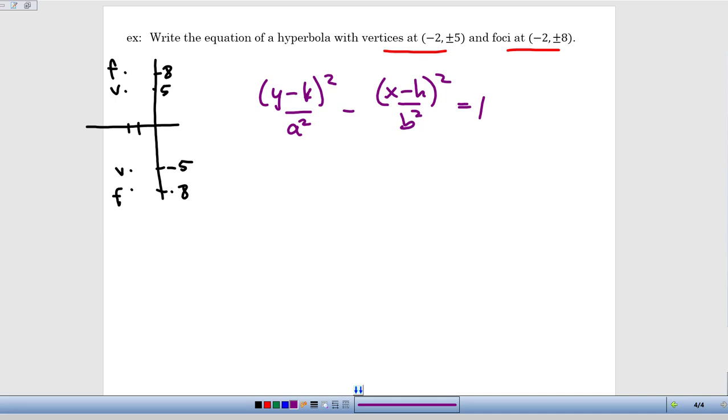So first of all, the center is going to be halfway between the vertices, it's going to be halfway between the foci, so hopefully that's obvious that that's going to be right here at the point (-2, 0). So that means as I start to fill in the information here, I've got y minus zero, or we can just leave it as y², and then x minus h² so x minus negative 2 becomes (x + 2)². So we've plugged in the value of the coordinates of the center.